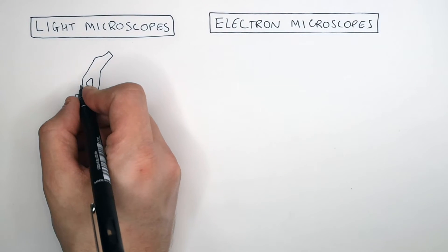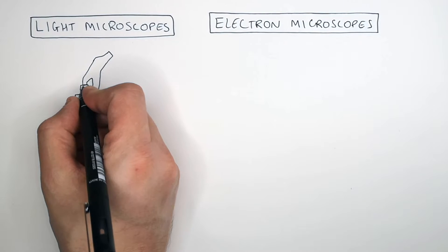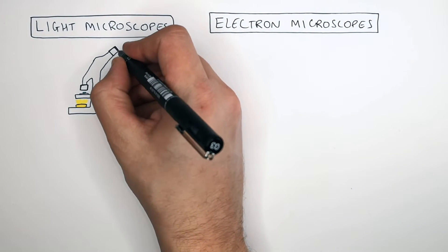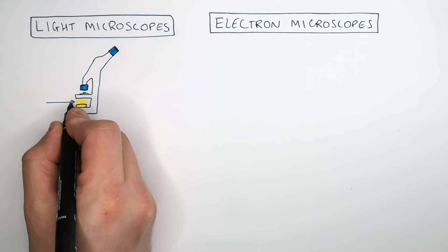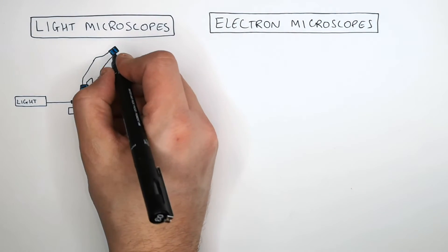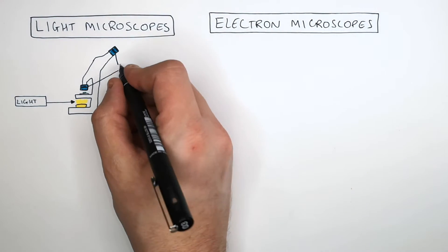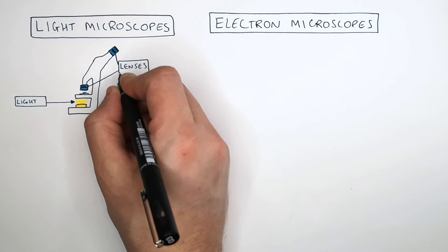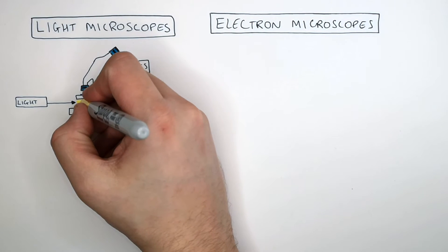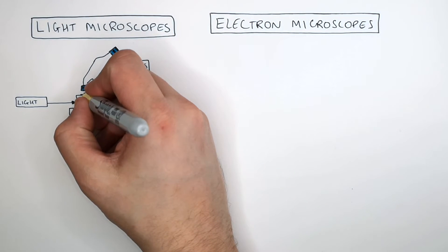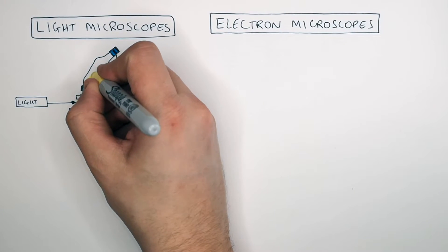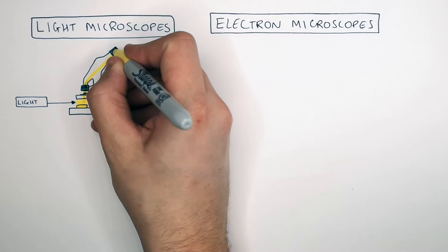The light microscope uses lenses — the objective lens and the eyepiece lens. The light travels through the specimen that is on the stage, and is then magnified as it goes through the objective lens, and then magnified once more as it goes through the eyepiece lens.